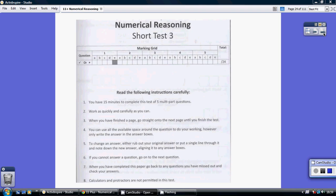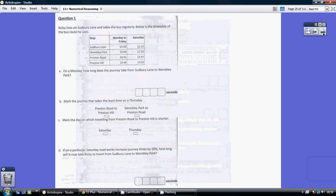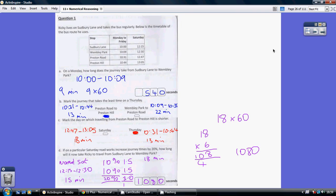Short Test 3, Question 1. So, on a Monday, how long does the journey take from Sudbury Lane to Wembley Park? Well, Monday is obviously Monday to Friday. Sudbury Lane to Wembley Park from 10 to 10.09. So that's obviously 9 minutes.